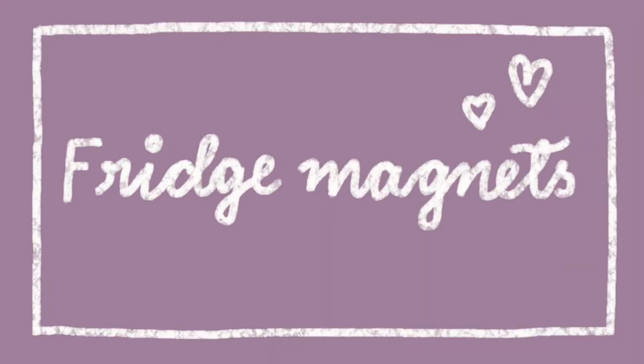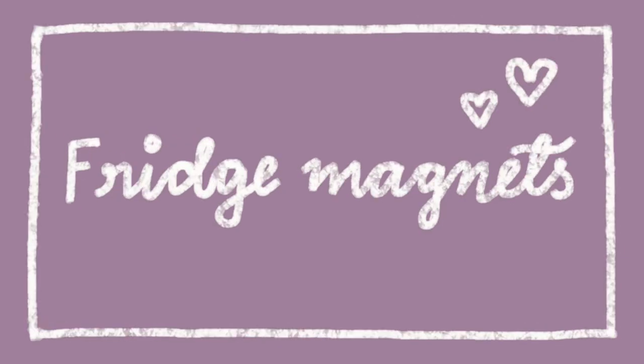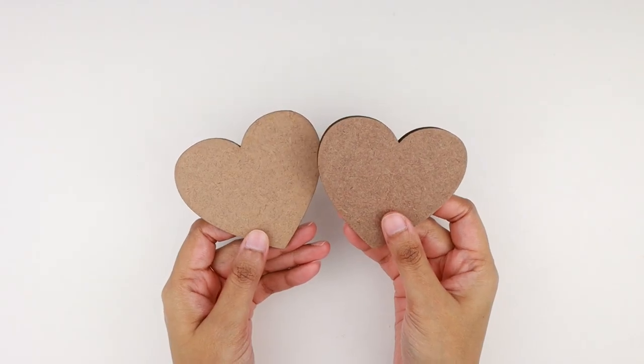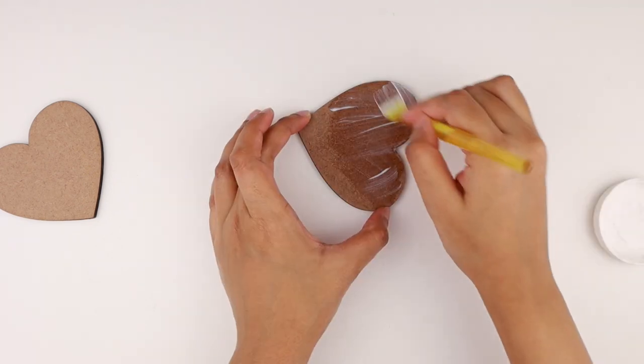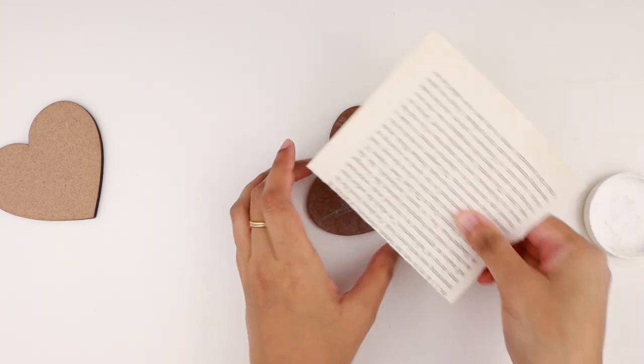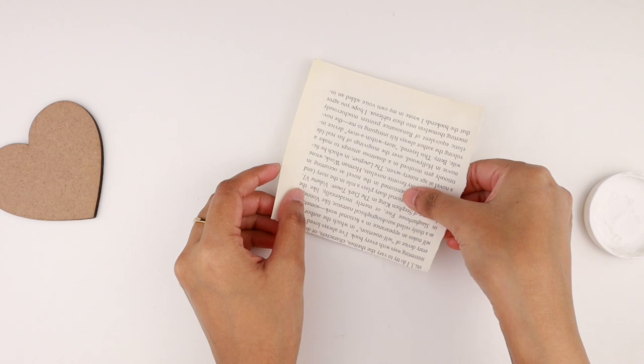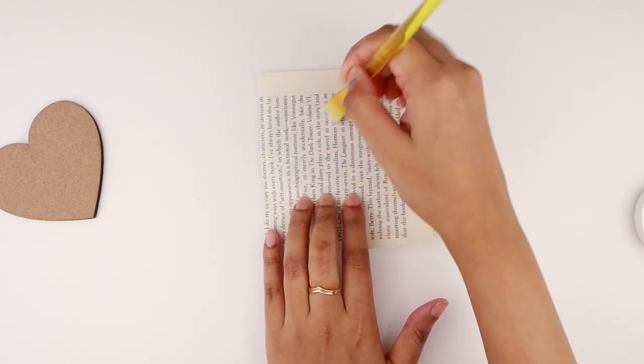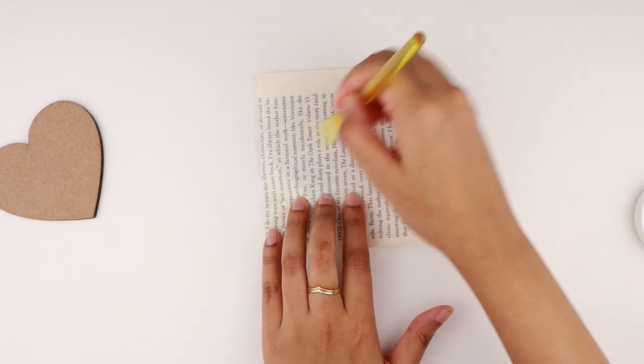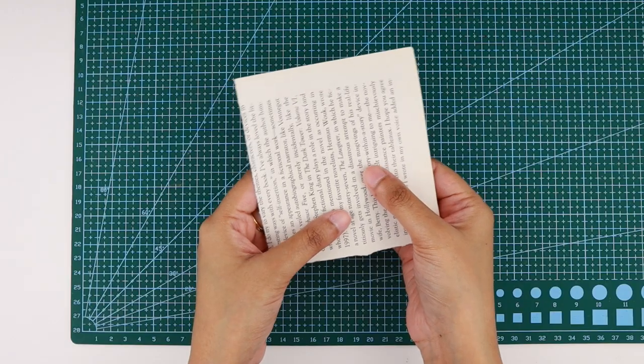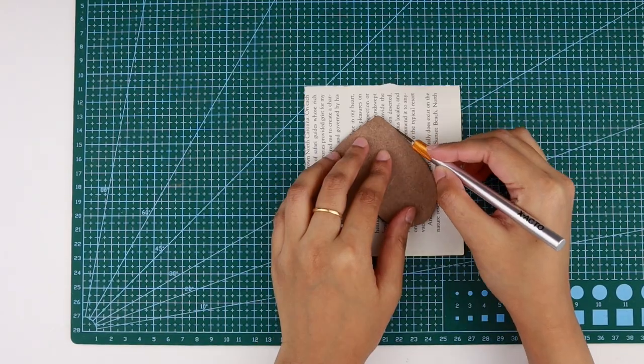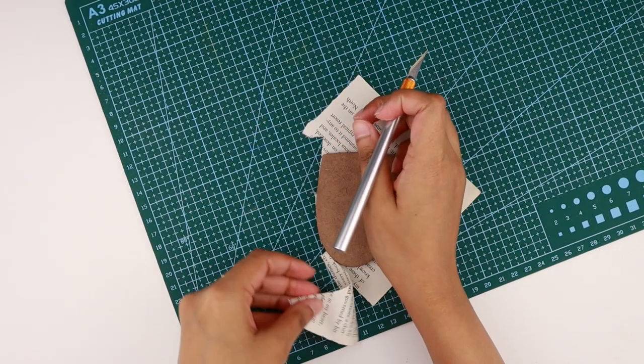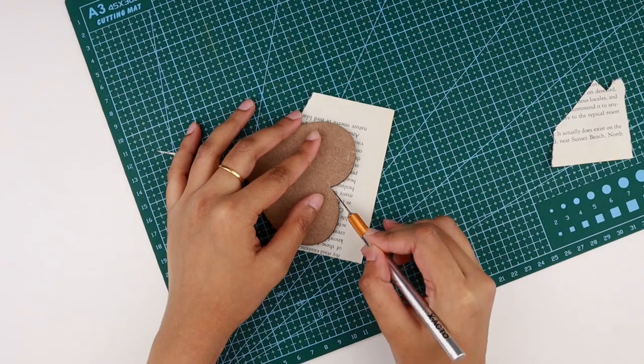Let's get started. For making the fridge magnets, I took two of these wooden hearts. I grabbed Mod Podge and applied a thin layer on one of the hearts. I took a page out of an old book and pasted it on the heart, then applied one more coat of Mod Podge on top to seal everything in place. Once the Mod Podge was dry, I turned it over and using a precision knife, I cut out the extra paper. You can trace the heart on the paper first and then cut and decoupage it.